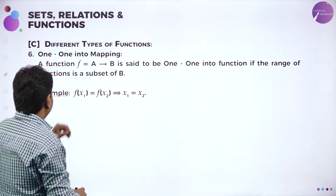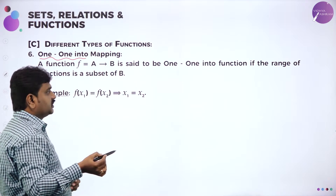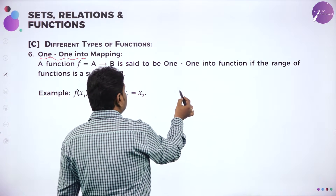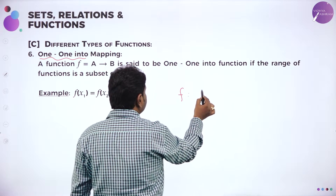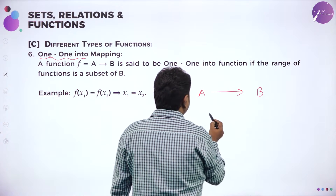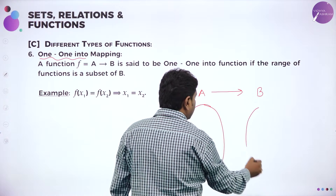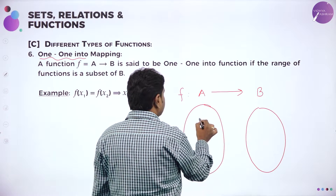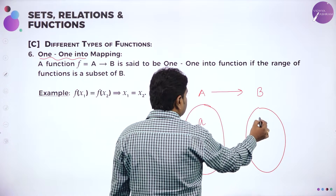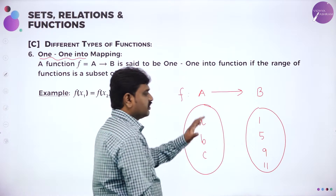See different types of functions. One-to-one into mapping — a function which is one-to-one as well as into. One-to-one means different elements in domain should have different images. So I will take f maps A to B. A ray diagram helps you to analyze easily. Say I will take A, B, C and 1, 5, 9, 11 — suppose this is a function.